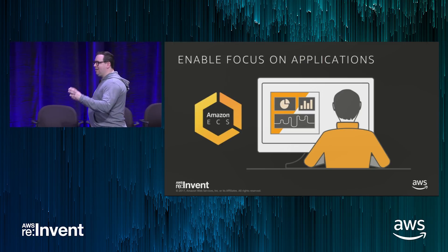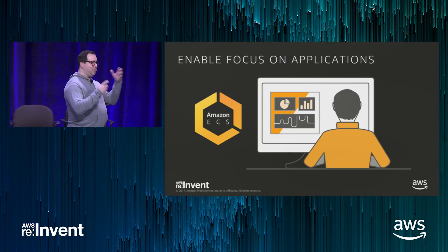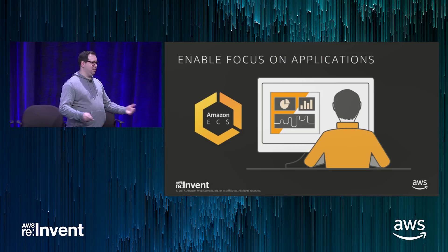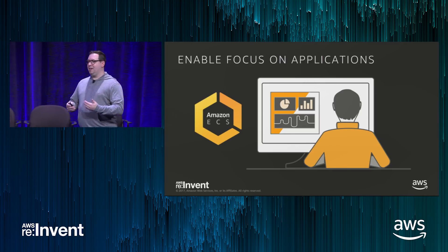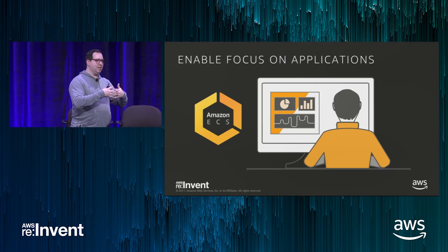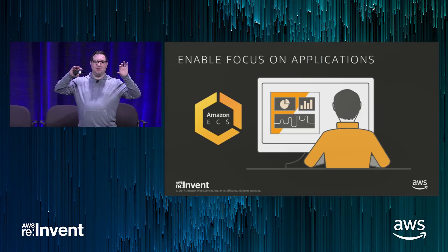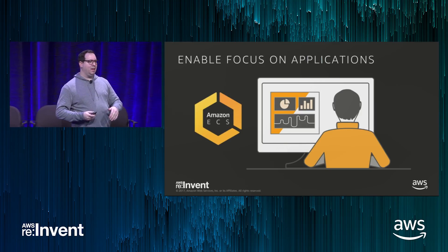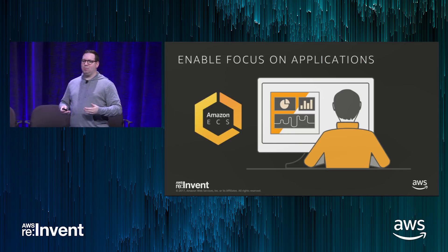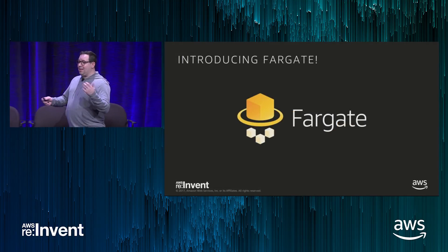The big lesson we've learned is: the more we encouraged and built primitives based off of the task, the more our customers just wanted to build their applications and think about applications at that level. They never wanted to think about the EC2 infrastructure anymore. They wanted to model their application in the task definition, think about things above that stack — how these applications can talk to each other, service discovery, high availability. But underneath, the EC2 instance management, managing the clusters, patching the operating systems, handling the lifecycle of those nodes — that was another layer of undifferentiated heavy lifting that we still had to solve for customers. And so that's why we built Fargate.